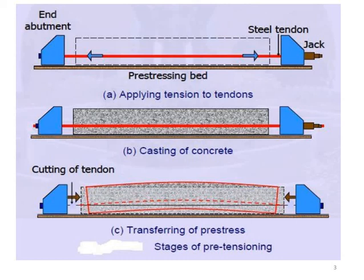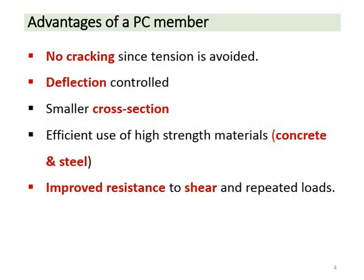The key element is the tendon. The tendon is cast within the concrete. Under normal load conditions, at this stage you apply tension to the tendons. Prestressed concrete controls the pressure at the ends, and the pressure distribution can be controlled.